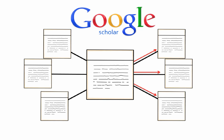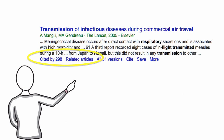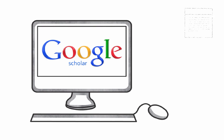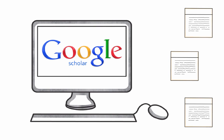In summary, take advantage of Google Scholar's article networks by using the Cited By and Related Articles links to quickly and easily locate more articles that are connected to your research.